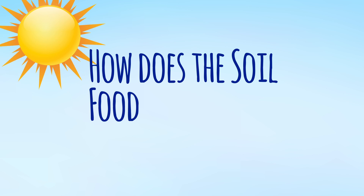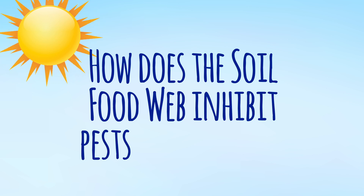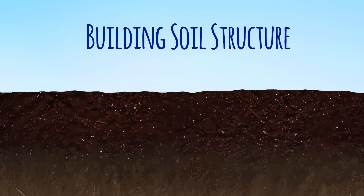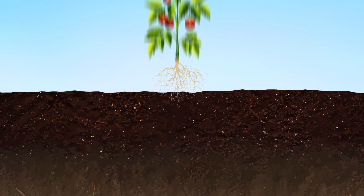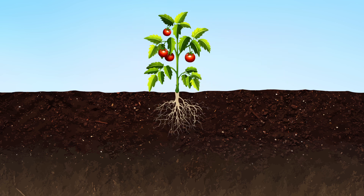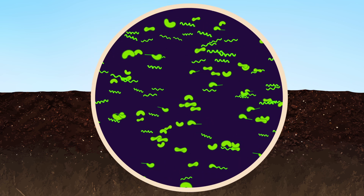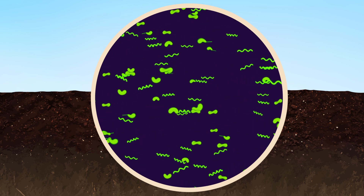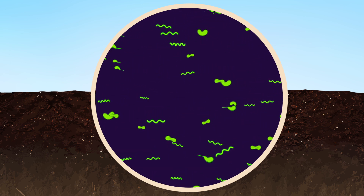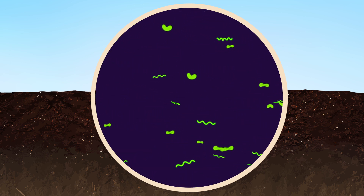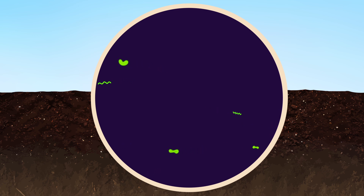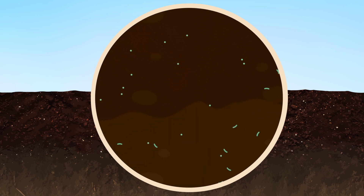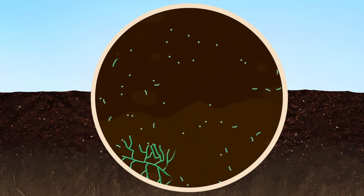How does the soil food web inhibit pests and diseases? If you've watched the animation on building soil structure, then you'll know that a well-structured soil is a hostile environment for most disease-causing microorganisms. That's because these anaerobic organisms don't do well in an oxygen-rich environment, meaning they are easily out-competed by the beneficial aerobic microorganisms that do thrive in oxygen-rich environments.